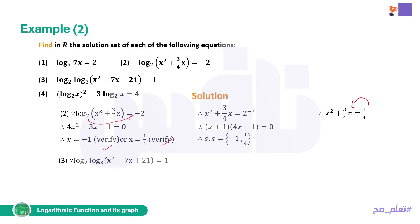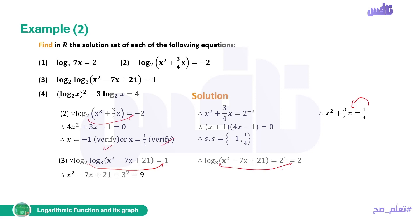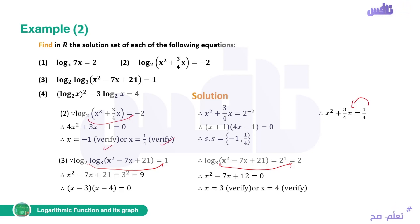Number 3: log base 2 of (log base 3 of (x squared minus 7x plus 21)) equals 2. First, 2 to the power of 1 equals the inner expression — wait, since the outer log equals 2, we get log base 3 of (x squared minus 7x plus 21) equals 2 to the power 1, which equals 2. Then x squared minus 7x plus 21 equals 3 squared equals 9, giving x squared minus 7x plus 12 equals 0. Factoring: (x minus 3)(x minus 4) equals 0, so the solution set equals {3, 4}.